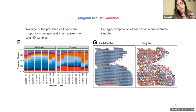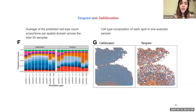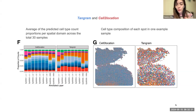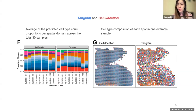They applied Cell2location and Tangram to predict cell type counts in spatial domains at the broad resolution — the nine spatial domains. Panel F shows the average predicted cell type counts across all 30 samples per spatial domain, and panel G shows an example tissue section where each spot has a small pie chart showing cell type count contributions. Overall, with Cell2location many counts are predicted as excitatory neurons — indicated by the blue color — compared to Tangram.